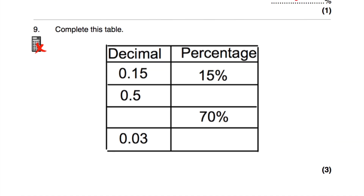Question number nine asks us to complete a table with decimals and percentages. One entry is given: 0.15 is 15%. Then 0.5 is a half, which is equal to 50%. 70% would be 0.7. And 0.03 is 3%. So we've completed the table: 0.5 is 50%, 70% is 0.7, and 0.03 is 3%. Remember, to convert decimals you times by 100 to get the percentage, or divide by 100 to get the decimal.